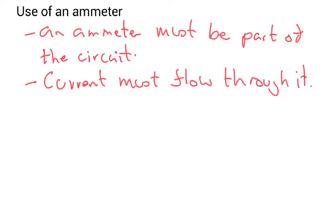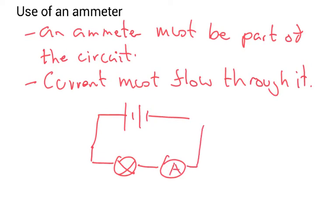Unlike a voltmeter that measures voltage across something, an ammeter has to be part of the circuit. For example, if I had a battery going into a bulb and I wanted to know the current going in and out of that bulb, I'll just put an ammeter here, part of the circuit.